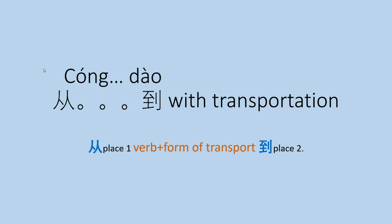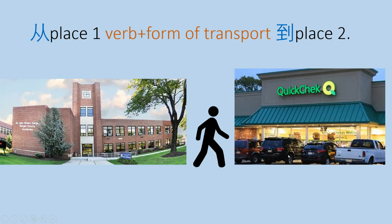Now when you're using it with transportation, the word order is slightly different. Instead of 从1到2 verb phrase, it's 从 place one, form of transportation, 到 place two. So to say, I walk from BCA to Quick Check, it would be 我从BCA走路到Quick Check.